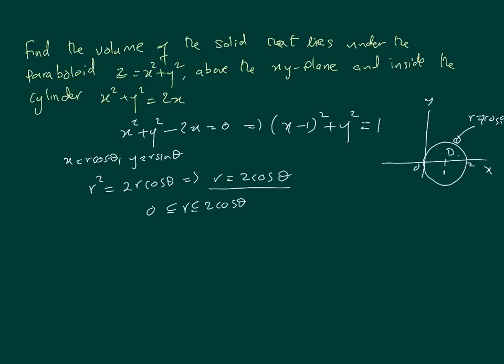We have to be careful — theta cannot go from 0 to 2π here because this is not a circle centered at the origin. The radius of this region means theta goes from minus π/2 to π/2. Those are the angles we're looking at. So the range of values is -π/2 to π/2.